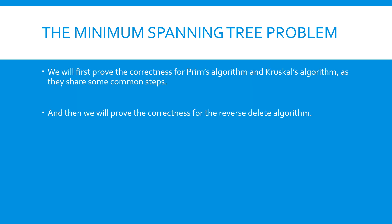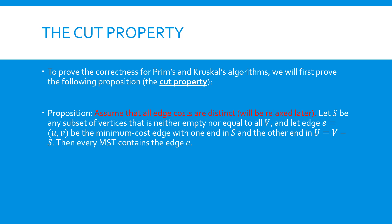In this video, we will prove that these algorithms are indeed correct and can construct an MST using local minimum edges. We will prove the correctness of Prim's algorithm and Kruskal's algorithm together, as many steps in their proofs are similar. Afterward, we will focus on proving the correctness of the reverse-delete algorithm. We will begin with proving an important property called the cut property.